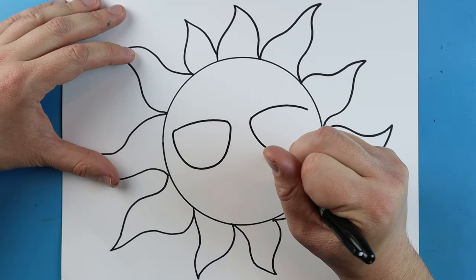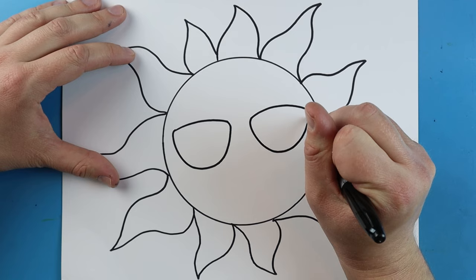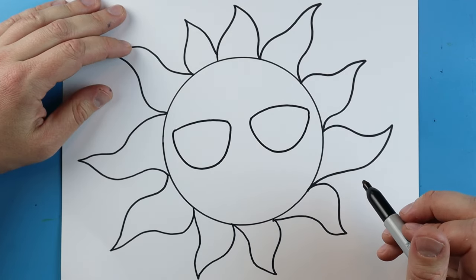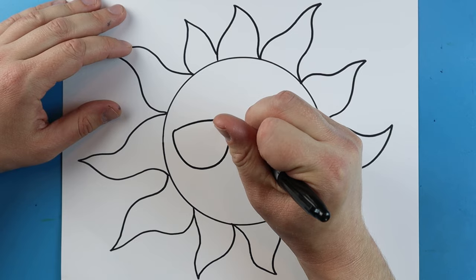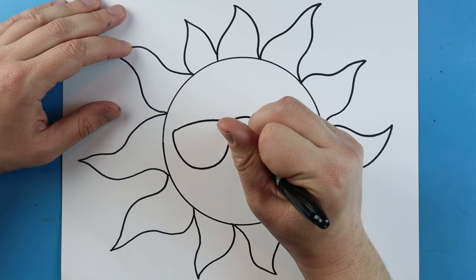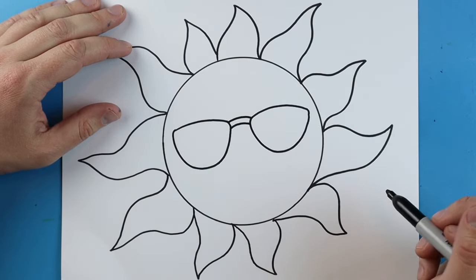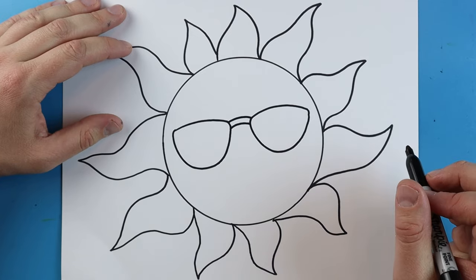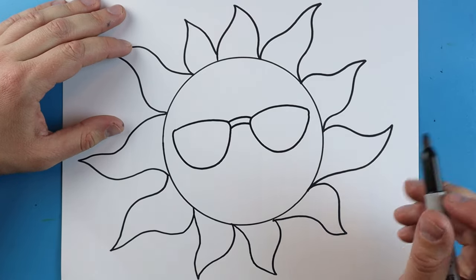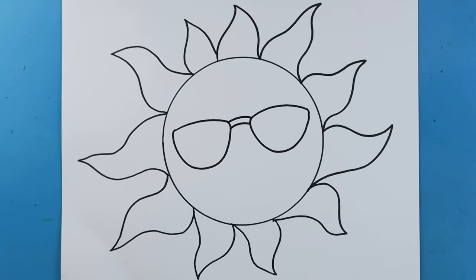We'll do the same thing here. We're going to go down and then come back up. I want to make a little line that comes across and another little line here. And then I'm just going to kind of leave it like that for my sunglasses.